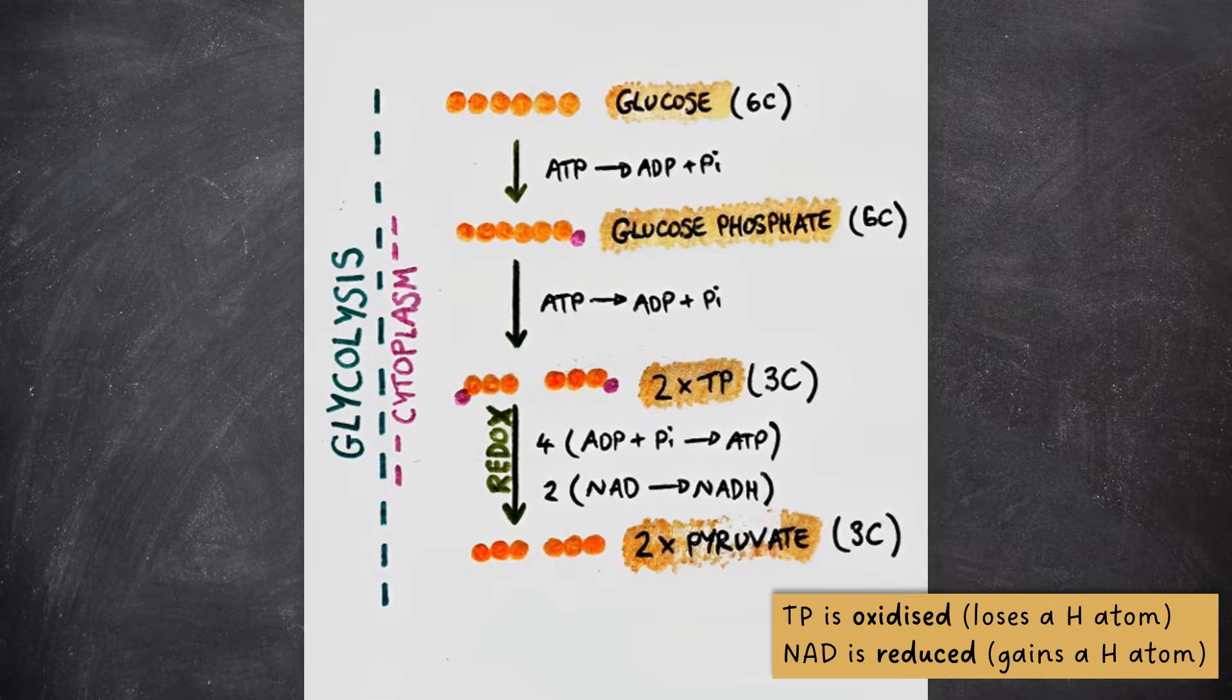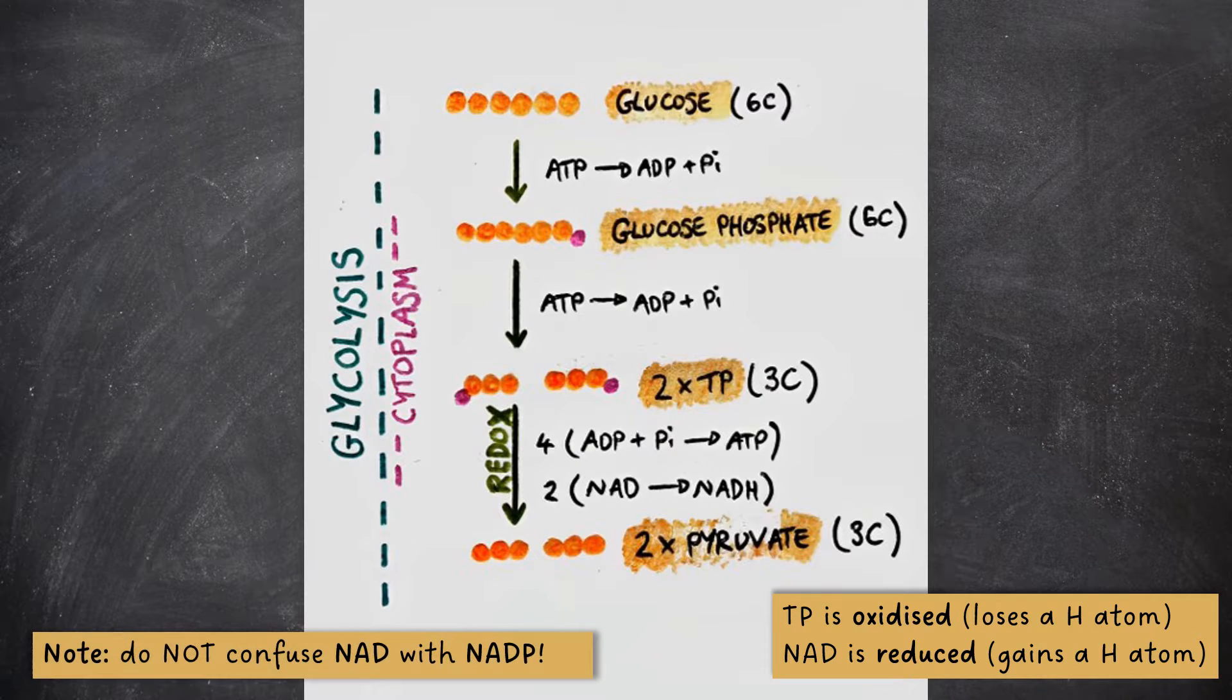This might be a bit confusing for those chemists amongst you, and I explained this in more detail in my previous video on photosynthesis, which you can find by just following the link top right. So, to go back to our reaction, two TP molecules are converted to two pyruvate molecules via a redox reaction with two NAD molecules, and also the reaction of four ADP molecules with four phosphate ions to form four ATP molecules. Be careful not to confuse NAD with NADP, which is the compound involved in photosynthesis.